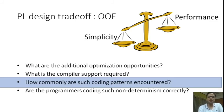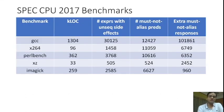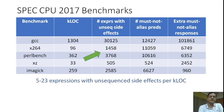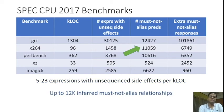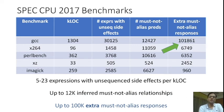How commonly are such coding patterns encountered in real-world code? We considered the SPEC CPU 2017 benchmarks and found that there are, on average, 5 to 23 expressions per thousand lines of code that contain unsequenced side effects. This indicates that programmers freely write expressions containing unsequenced side effects, even when not doing so for performance. Oolala was able to infer up to 12,000 must-not-alias relationships in these programs, resulting in up to 100,000 extra must-not-alias responses. Without Oolala support, these 100,000 responses would have been decided as may-alias responses.